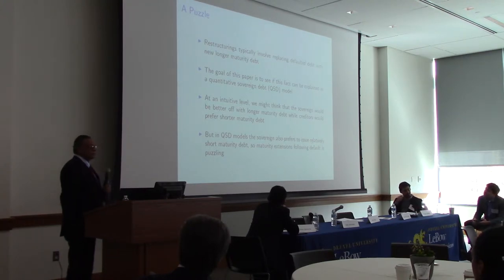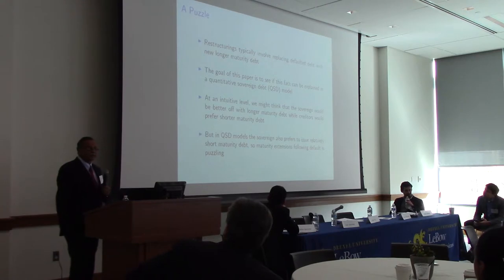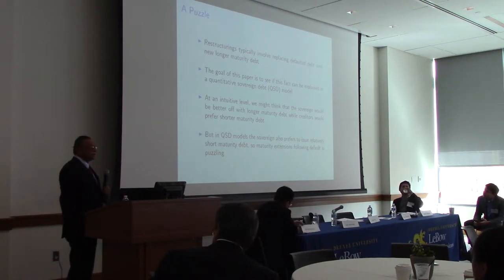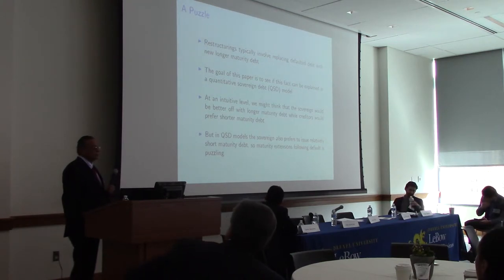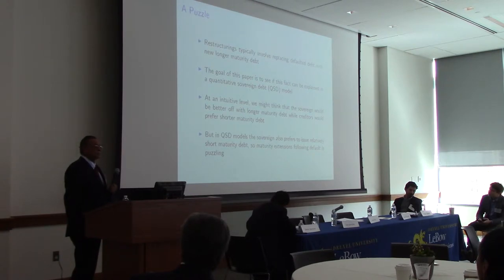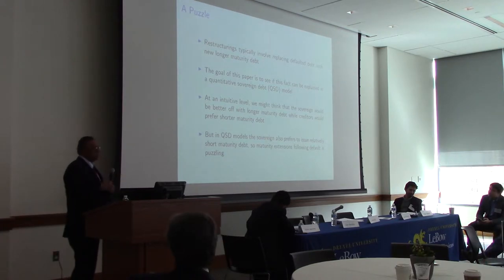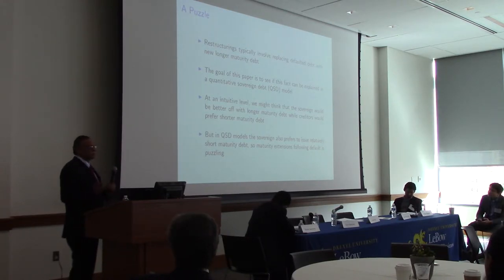At an intuitive level, one might think sovereigns prefer longer maturity debt because it reduces debt service, while creditors would prefer short-term debt because they worry about default. But it turns out in these models, everybody prefers short-term debt. The reason is that the sovereign is a discretionary policy maker: with long-term debt, issuing more debt inevitably imposes a capital loss on existing creditors, but the sovereign has no interest in accounting for that. Creditors understand this, so long-term debt becomes expensive from the start.